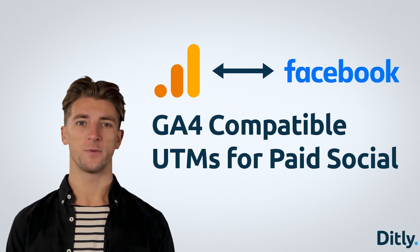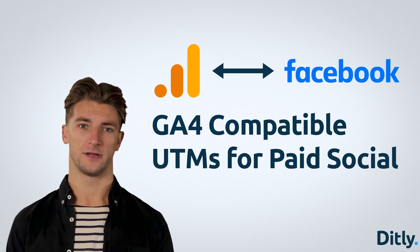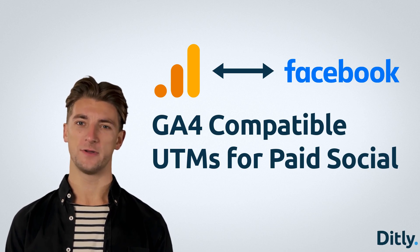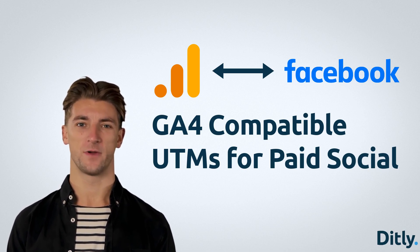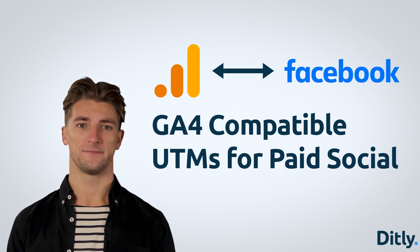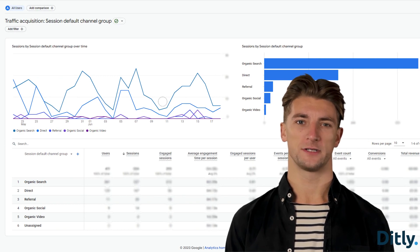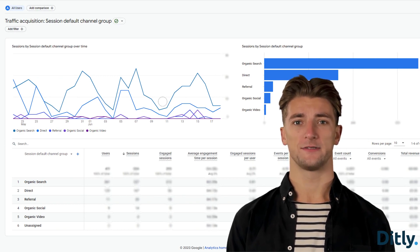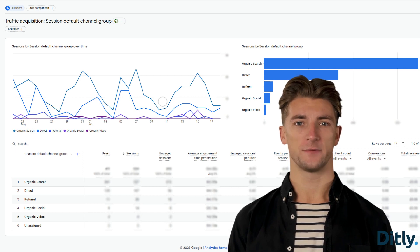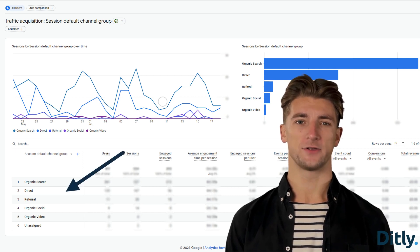If you're running paid social ads and using Google Analytics 4, otherwise known as GA4, then you need to know this to format your UTM parameters correctly before July 2023. Google has changed the default channel grouping in GA4, so it can't be edited. That means you can no longer filter out your custom UTM parameters and include them in the paid social channel.